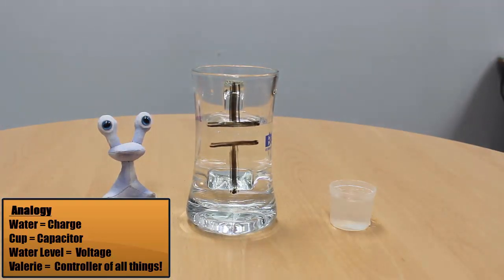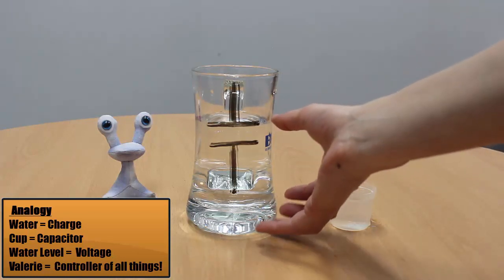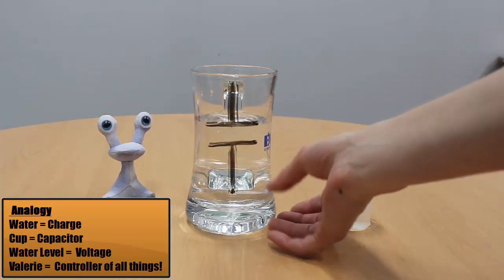So in a steady state system, charge coming in and charge coming out have to be equal, they have to be balanced. Otherwise, the voltage here will start to increase or to decrease.